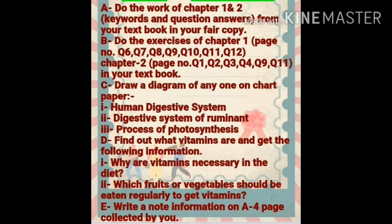You can draw the Human Digestive System, or the Digestive System of Ruminants, or you can show the Process of Photosynthesis on your chart paper. These are the three topics given to you — you have to choose any one of these three topics and make it on your chart paper.